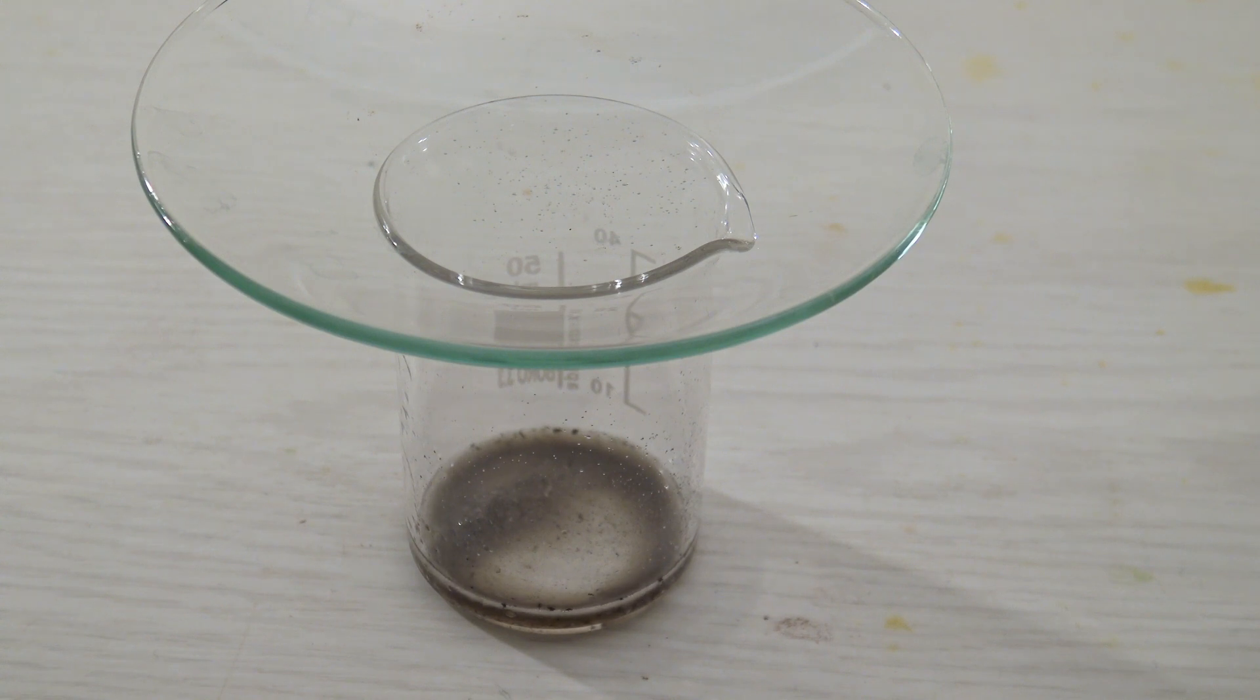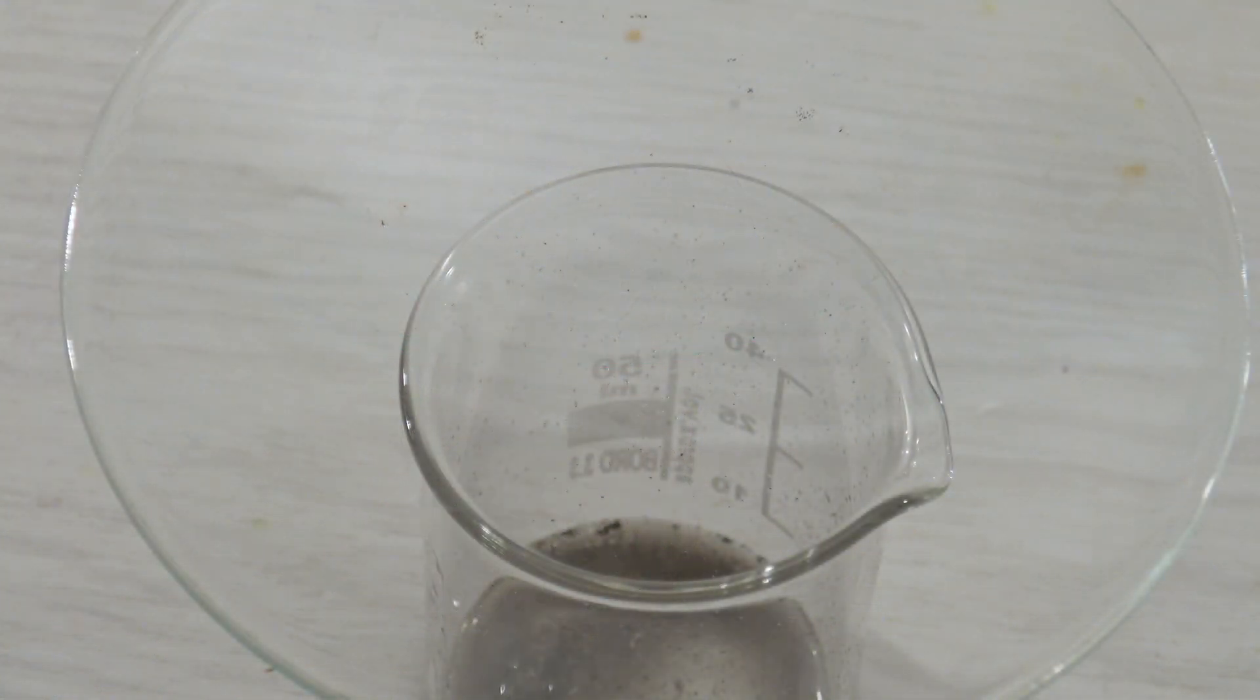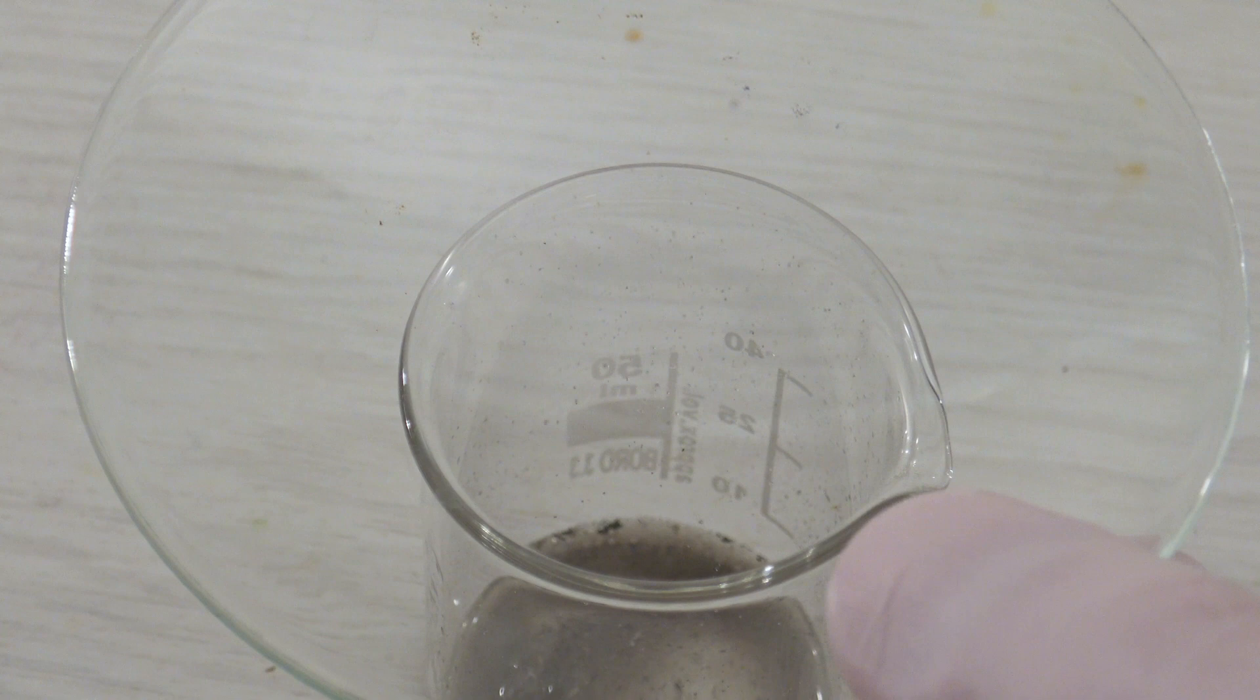Usually, lead acetate paper is used to find out if hydrogen sulfide has formed. In this case, paper was used that had been soaked with lead nitrate, but the reaction is practically the same.